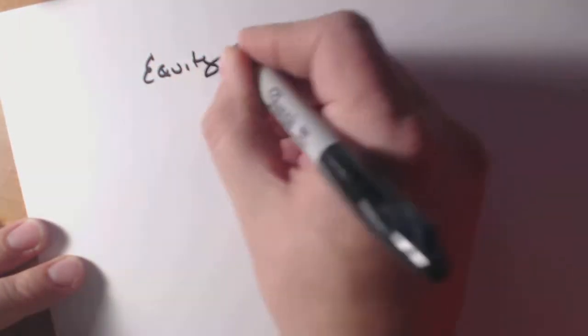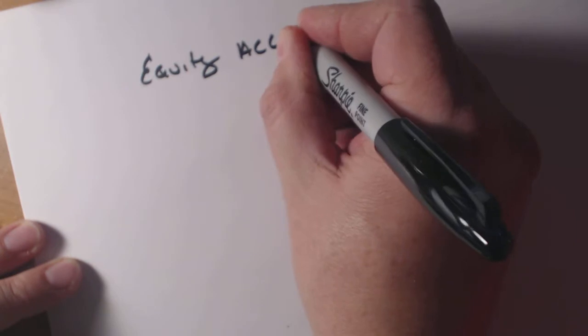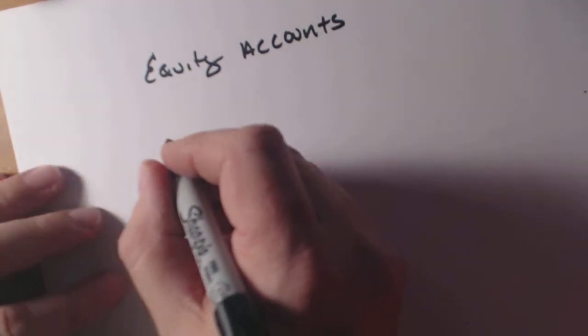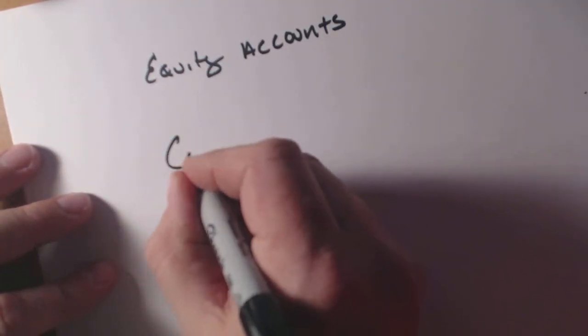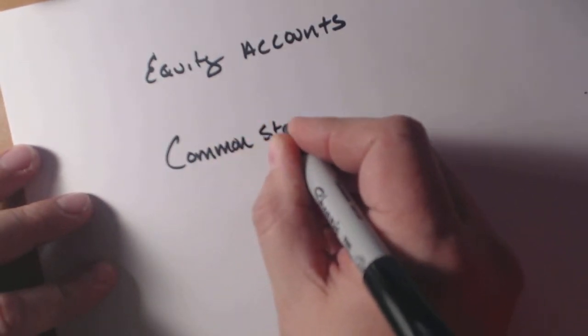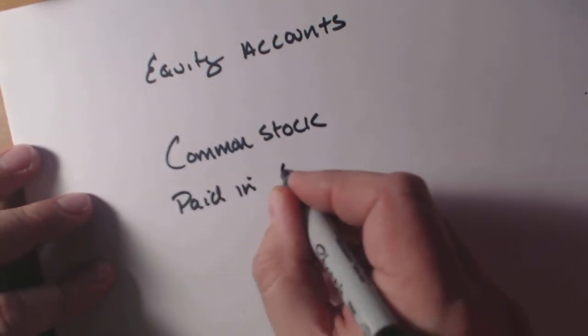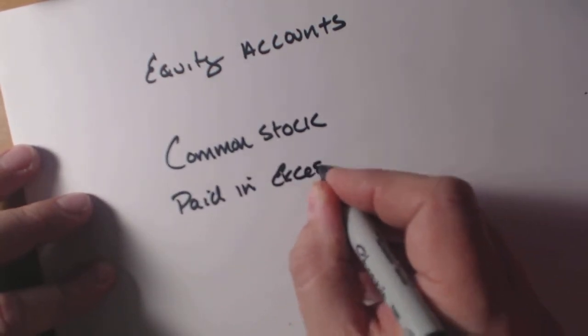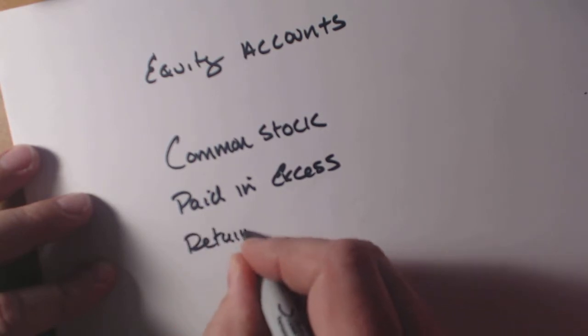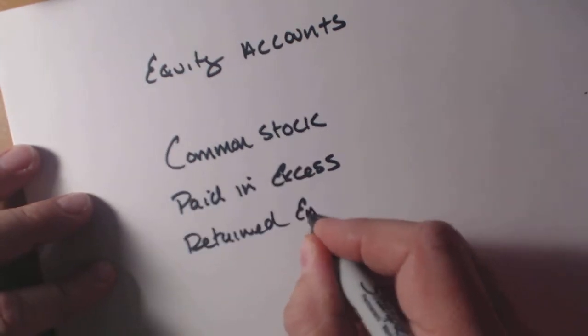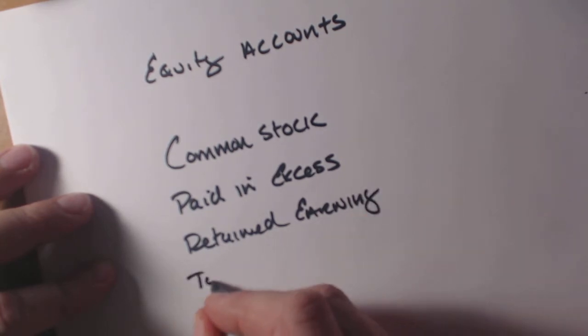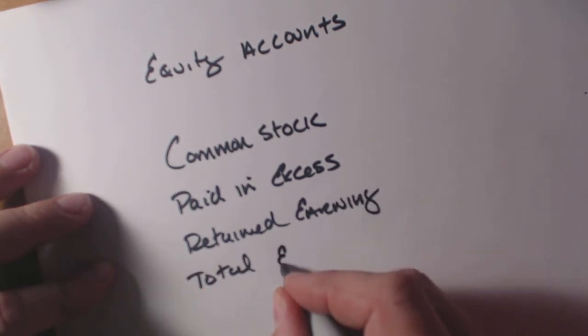Now the question asks us to develop equity accounts. We're going to set this up with four lines: the first is common stock, the second is paid-in excess, the third is retained earnings, and then we'll have total equity. We need to figure out what each one of these amounts to.